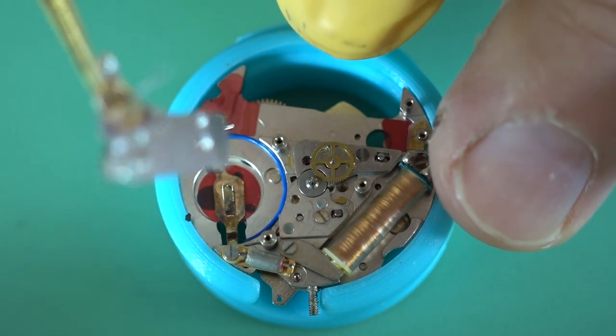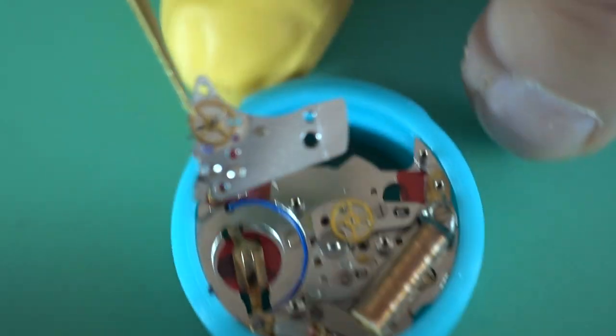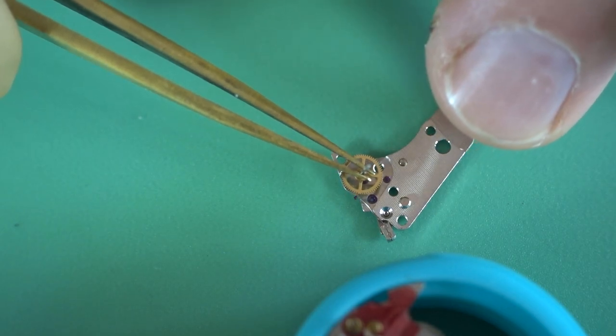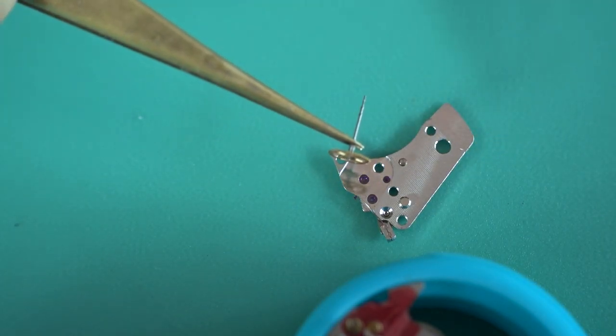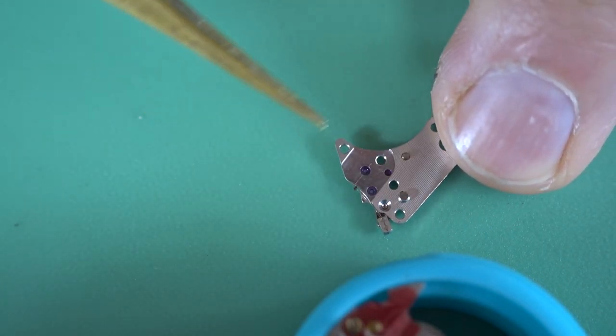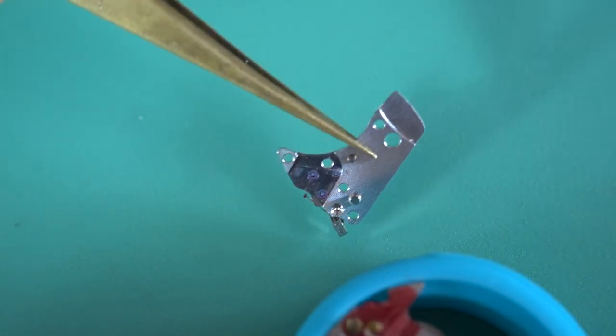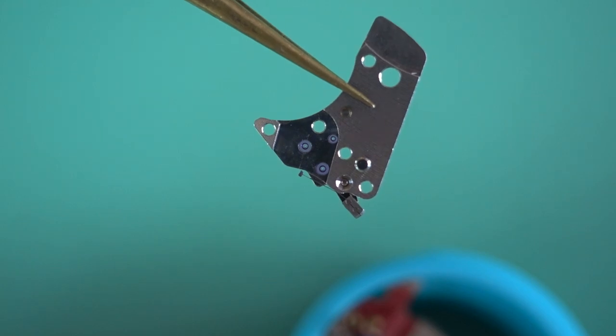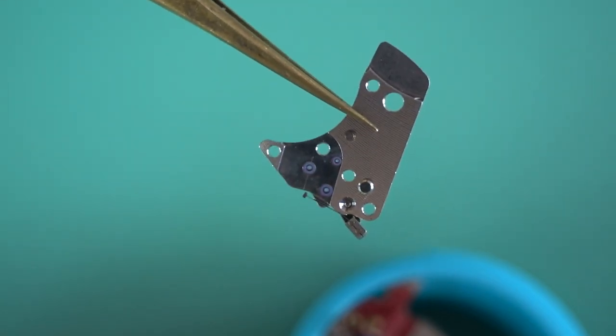That's the underside of that plate there. We've just taken this gear with it. The reason this has come off with it is the oil that's supposed to be there has turned into a goo. So that's just come off. You can see the underside there. There's nothing too special under there. There's some jewels. And you'll see that tiny little thing there, that tiny little jewel on a lever.